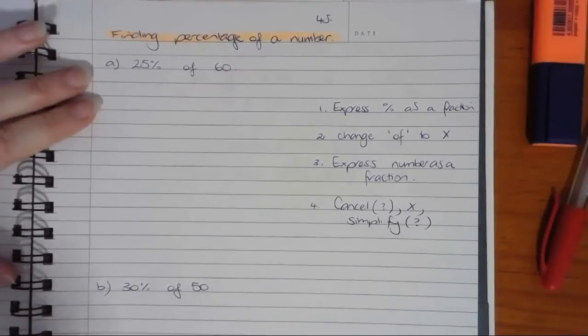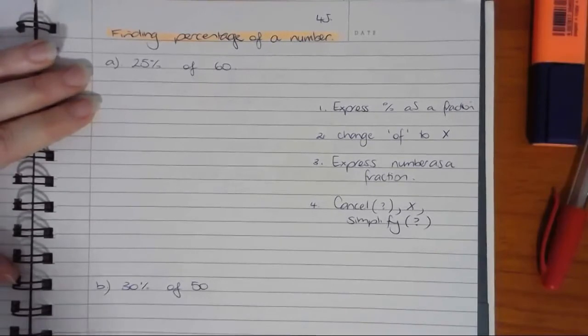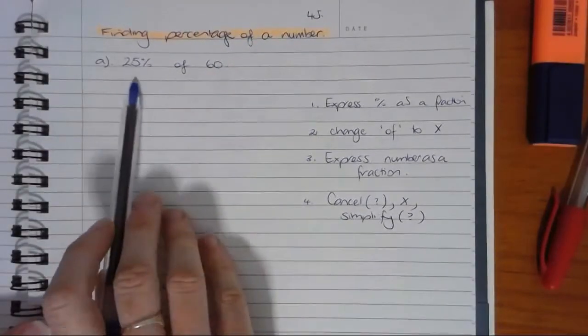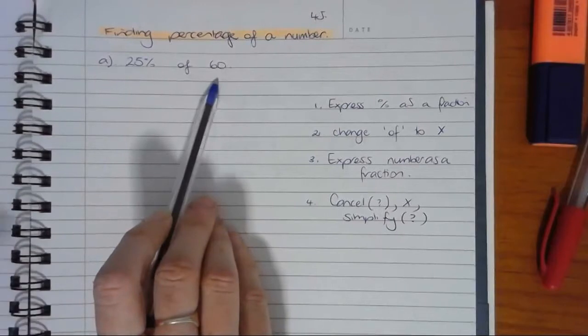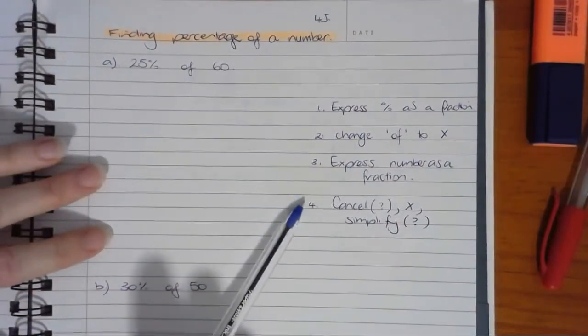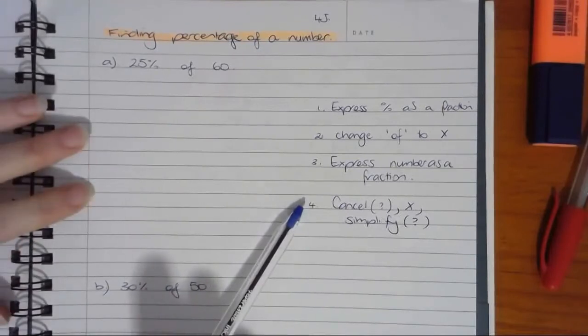There is also another way to do this and I might show that in a separate video too, but this is the number one option for any type of question. The percentage question I have is 25% of 60, and what I've got written here on the side is the four-plus steps that you're going to do when you're working with these questions.